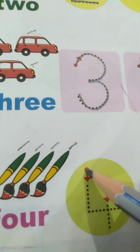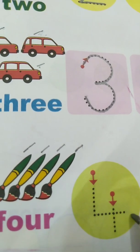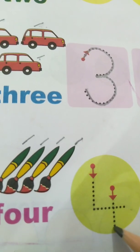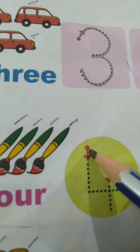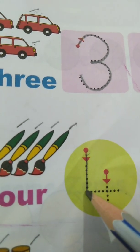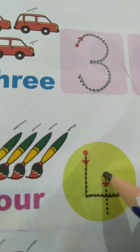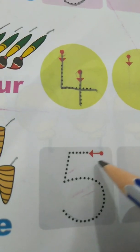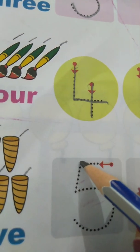Number 4 is a standing line, sleeping line and one more standing line. This is number 4.